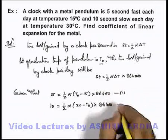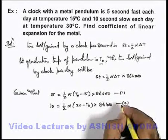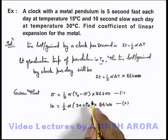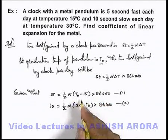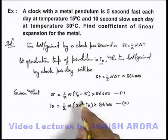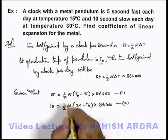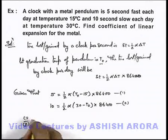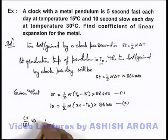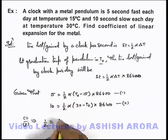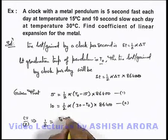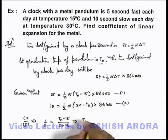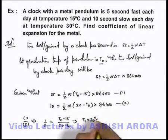Now say if this is our equation 1 and this is our equation 2, we can directly divide the two equations and get the relation between T₀ and alpha. So if you divide this, alpha gets cancelled out. 1 by 2 will give you 1/2 is equal to T₀ minus 15 upon 30 minus T₀. On solving we'll get T₀ is equal to 20 degree centigrade.